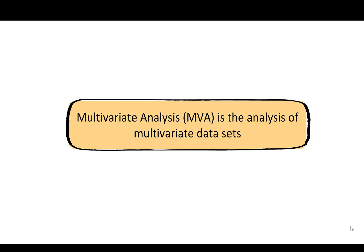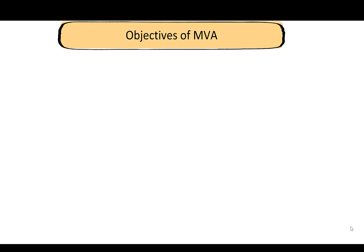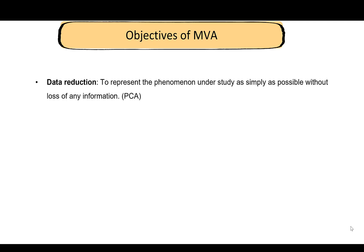Multivariate analysis is basically analysis of multivariate data sets. One of the objectives is data reduction — representing the phenomenon under study as simply as possible without loss of information, or with as little loss of information as possible. One technique we will learn about that does this is PCA, or Principal Component Analysis.